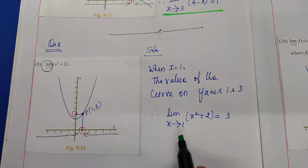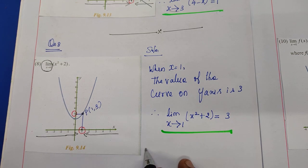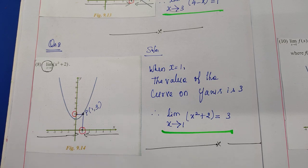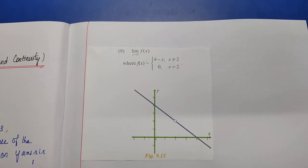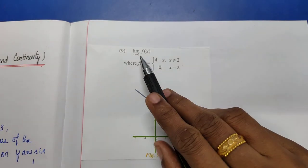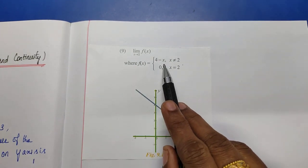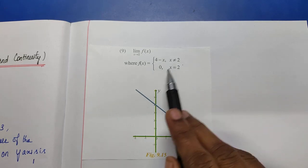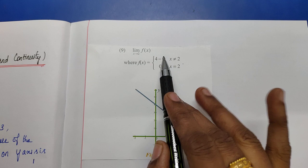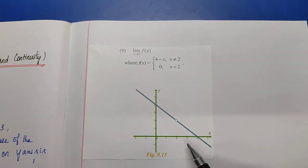Question number 8 is over. Now question number 9. Question number 9 is: limit x tends to 2 of f(x), where f(x) equals (4 minus x) when x is not equal to 2, and f(x) equals 0 when x equals 2. We estimate the value of this function using the graph given below.